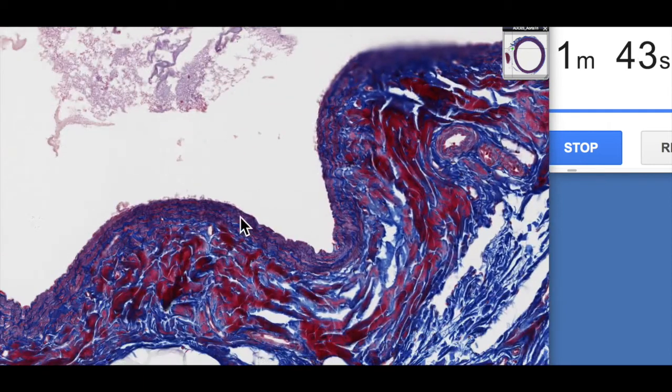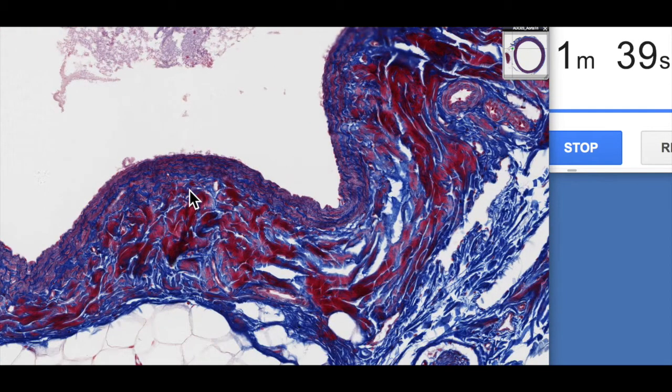Veins are typically characterized by having a thin tunica media in comparison to an equivalent blood vessel and then a thick tunica adventitia. You can see these big bundles of collagen on the outside of this blood vessel here. So we've got a little bit of elastic fibres. You can see the simple squamous endothelium here of the tunica intima.